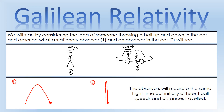Now both of these observers, if they had a stopwatch, would measure exactly the same flight time, because all the velocities here are really small, so they'll measure pretty much an identical flight time. But observer two, if they don't take into account their own motion, would measure that the ball has traveled a different distance and therefore a different speed, because they're only aware of the up and down motion, so they see it traveling a shorter distance and think it's traveled at a smaller speed, at least initially.